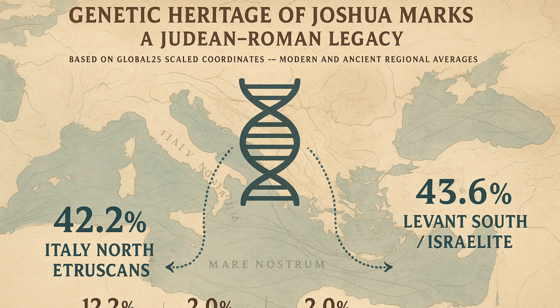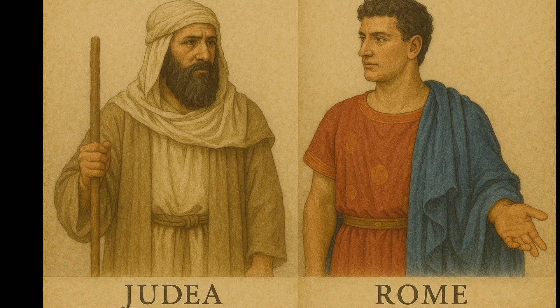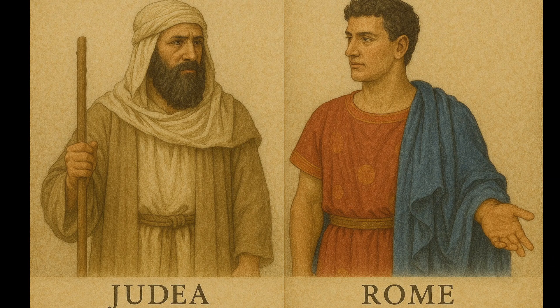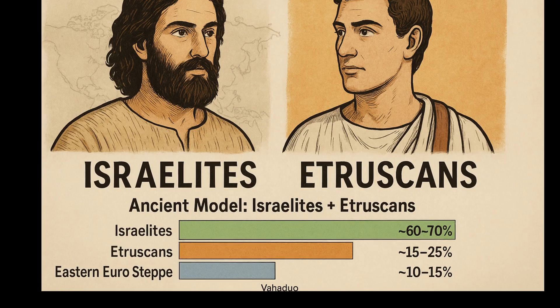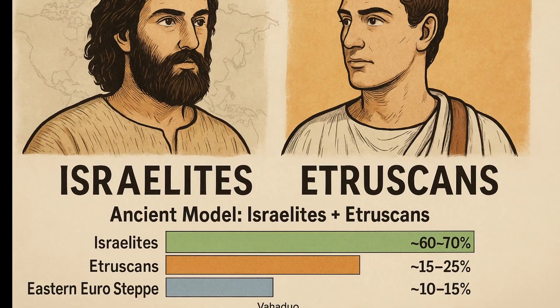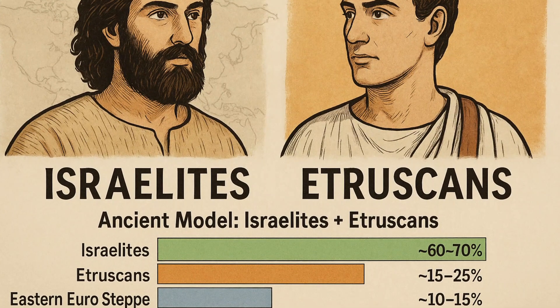In that version, over 85% of my ancestry was modeled as a blend of ancient Israelites and Etruscans — two populations that together represent the Levantine and Mediterranean genetic foundations of Ashkenazi Jews. The remaining portion aligned with steppe-influenced Eastern European groups, which makes sense given centuries of Jewish life in Slavic regions.